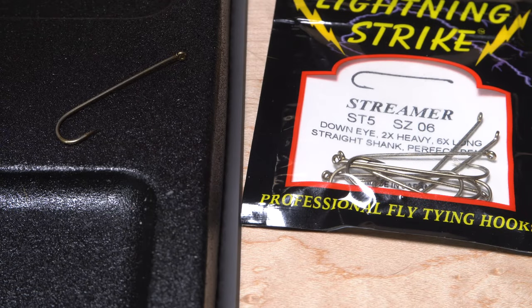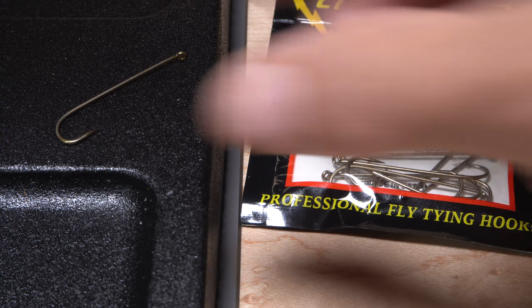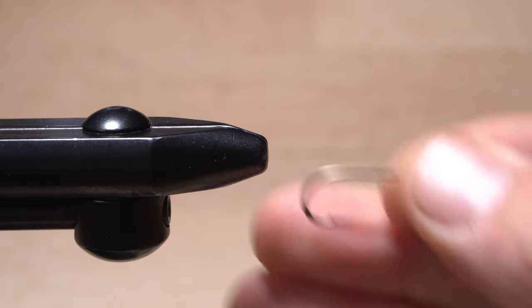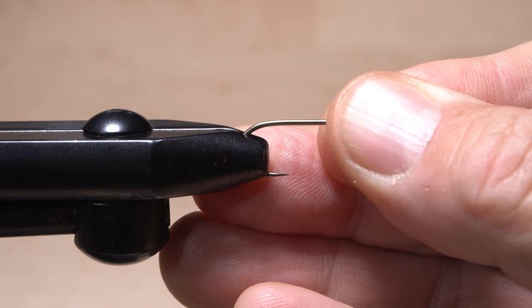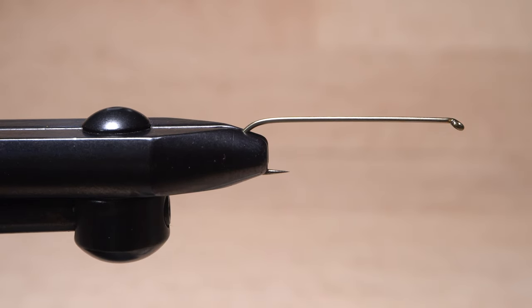The foundation of a cut shank streamer starts with a long streamer hook like this Lightning Strike ST5 in size 6. Begin by getting the full bend of the hook firmly secured deep in the jaws of your tying vise.